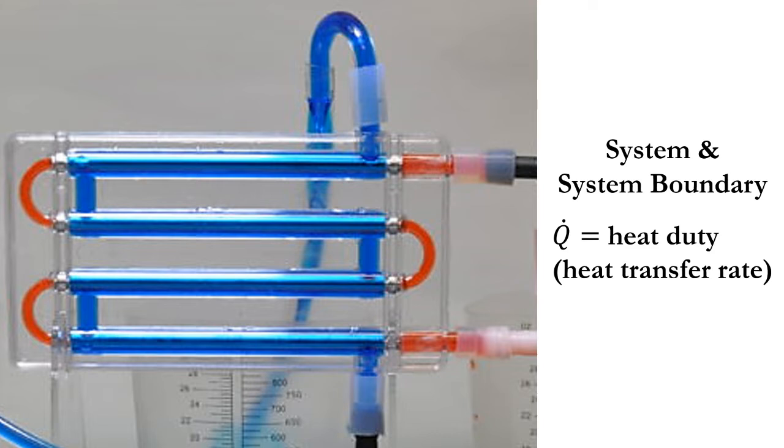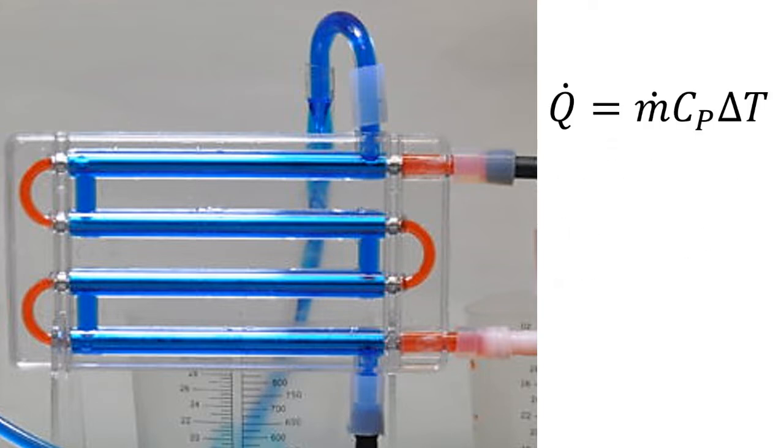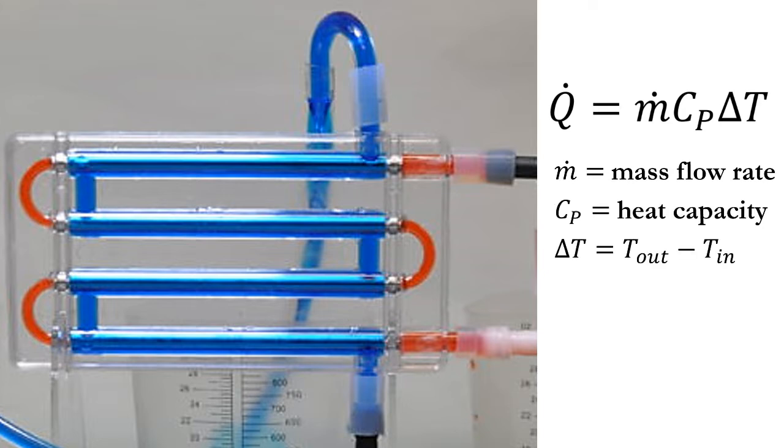First, let's think about how this is calculated. To determine the heat duty experimentally, we use this equation, where ṁ is the mass flow rate, Cp is the heat capacity of the fluid, and ΔT is the temperature change of the fluid through the heat exchanger.